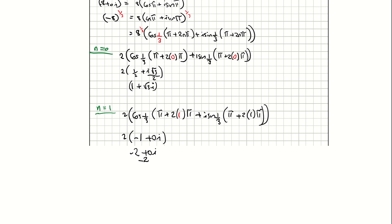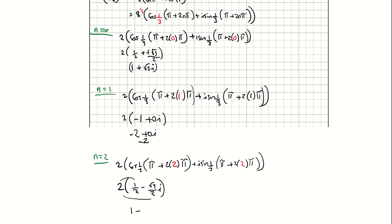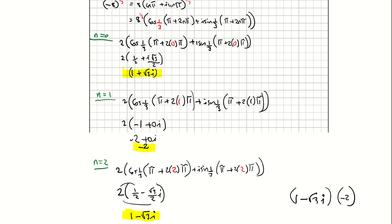For n equals 2: 2 times cos of one third times pi plus 4 pi, plus i sine of one third times pi plus 4 pi. Evaluating on the calculator — make sure it's set to radians — gives 2 times one half minus root 3 over 2 i, which multiplies out to 1 minus root 3 i. So the three complex numbers are 1 plus root 3 i, negative 2, and 1 minus root 3 i.